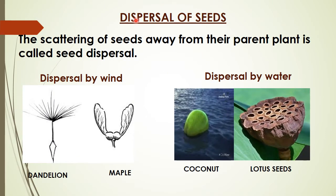Let us study dispersal of seeds. Seeds need to be scattered to new places so that they have better chances of germination and survival. This scattering of seeds away from their parent plant is called seed dispersal. Nature has its own ways of dispersing seeds from parent plants to other places.